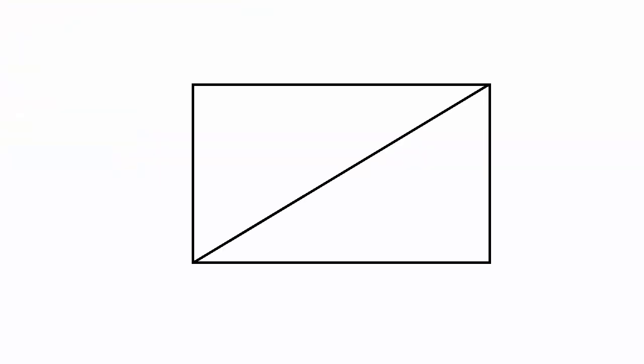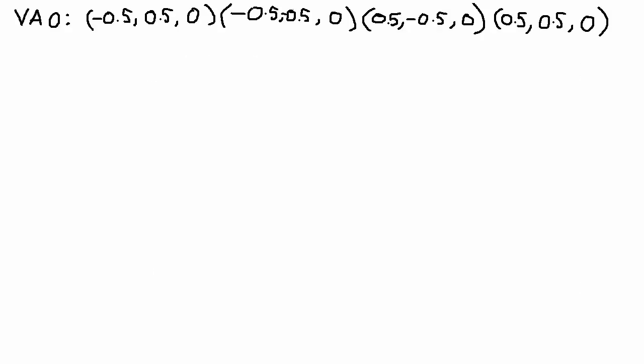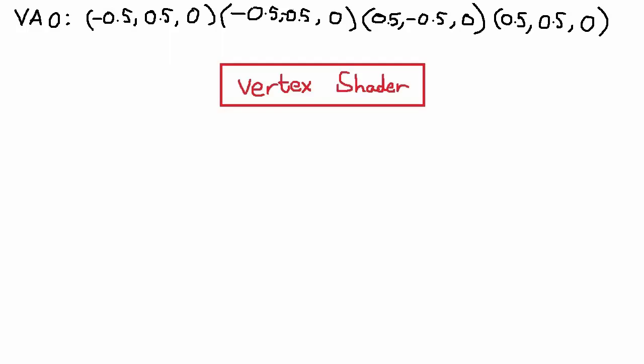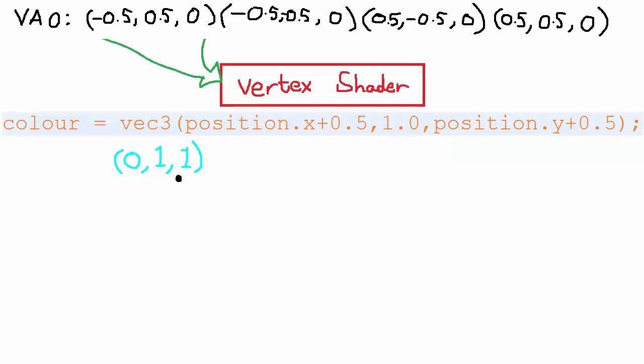Let me give a quick recap of what we've just programmed. We've got our quad with its four vertices stored in an attribute array in a VAO. The vertex shader we've just programmed has access to these positions in the form of that VEC3 position variable. The vertex shader executes for each vertex and uses this input position to first tell the GPU where on screen the vertex should be rendered — we did this by setting the gl_Position variable. Then the vertex shader calculates a color for each vertex based on its position: the red component is set to X position plus 0.5, the green component to 1, and the blue component to Y position plus 0.5.